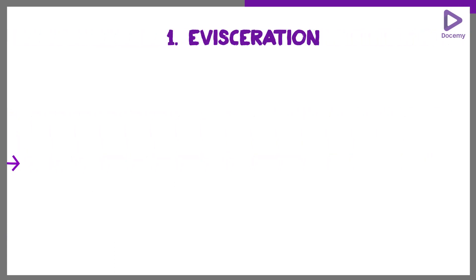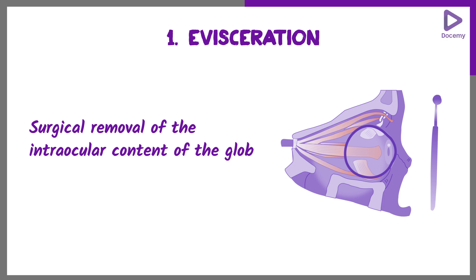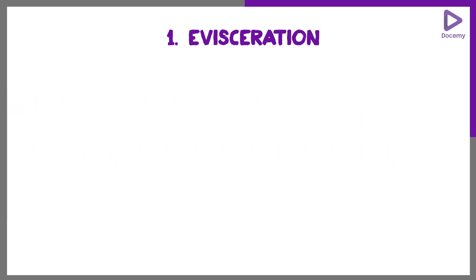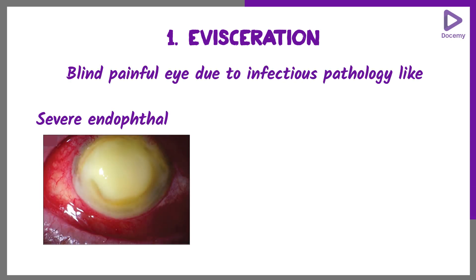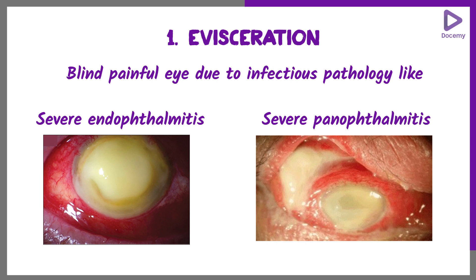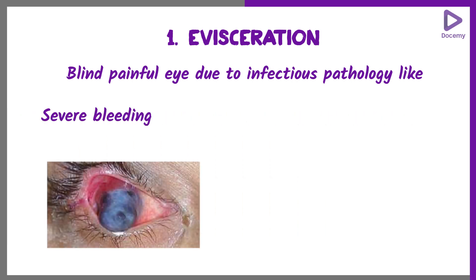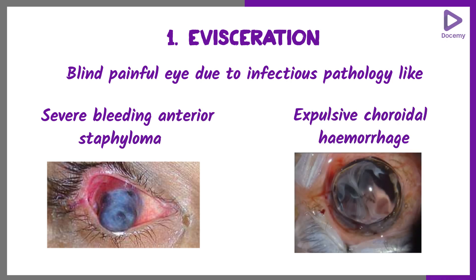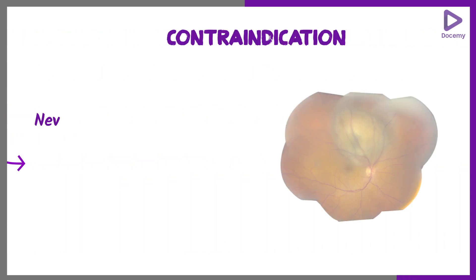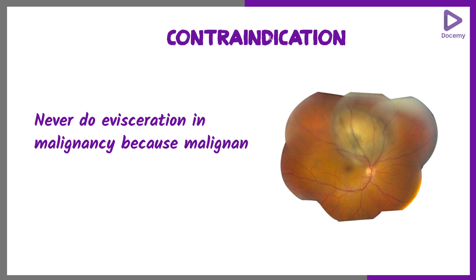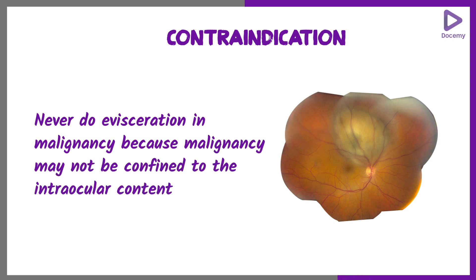It is mainly of three types. First, evisceration — the surgical removal of the intraocular content of the globe, leaving behind a scleral shell. You do it in any pathology confined to the globe alone, such as a blind painful eye due to infectious pathology like severe endophthalmitis or panophthalmitis, or severe bleeding from the uveal tract like bleeding anterior staphyloma or expulsive choroidal hemorrhage. Never do evisceration in malignancy, because malignancy may not be confined just to the intraocular content.